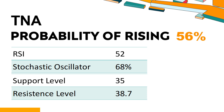Trend Outlook: The probability of TNA share price rising is 56%. When the probability of rising is higher than 50%, the stock has a higher chance of rising. Combining multiple technical analysis indicators, TNA has four bullish signals and two bearish signals. TNA's short-term support level is 35.3; if it falls below 35.3, it will have a chance to test 35.0. TNA's short-term resistance level is 38.1; if it breaks through 38.1, it will look up to 38.7.